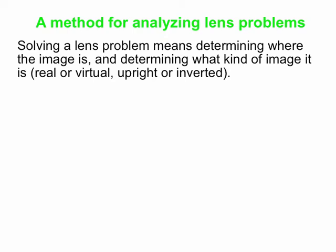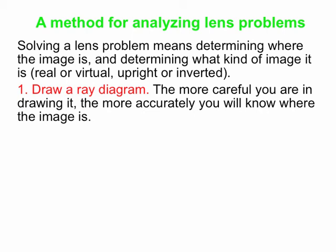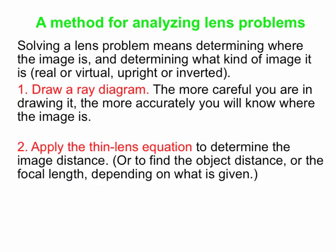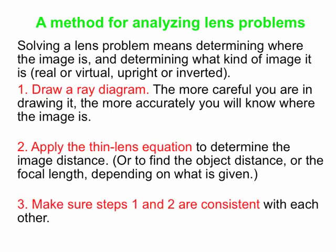Here's our general method for analyzing lens situations. A lens problem typically asks: given a lens and an object, where is the image, and what kind is it — real or virtual, upright or inverted, smaller or larger? First, draw a ray diagram carefully with a ruler. Second, apply the thin lens equation and the magnification equation to determine image distances and heights. Finally, check that what you get from the equations is consistent with the ray diagram — if they're not, that's a big clue you're doing something wrong.